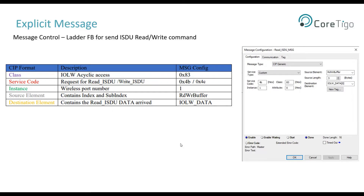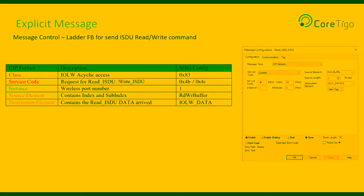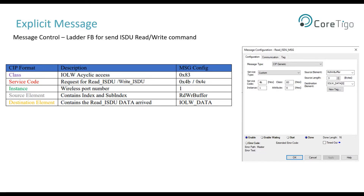In order to send ISDU commands in the Studio 5000 environment, we will use the explicit message using the message control block element. In general, the parameters of this block are: message type SIP generic, service code 4B for reading ISDU, and 4C for writing ISDU, class 83, and instance — the index of the port number at which the IO-Link device is operated.